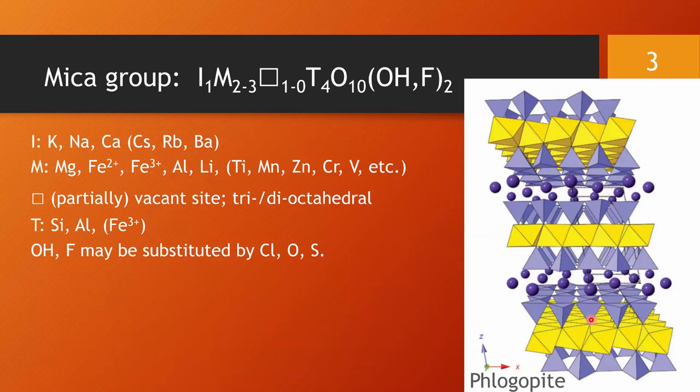Let's summarize the variability of the elements that we can expect to find in mica group minerals. On the I position we find dominantly potassium. We might find sodium or calcium as major elements. Cesium, rubidium, barium, perhaps a few others, might be abundant as trace elements.